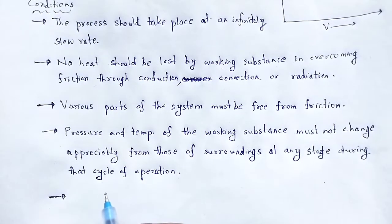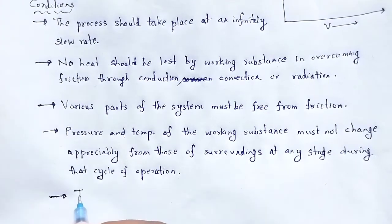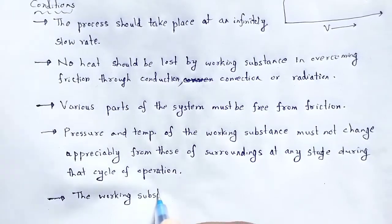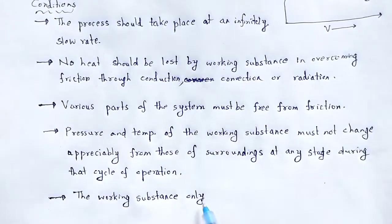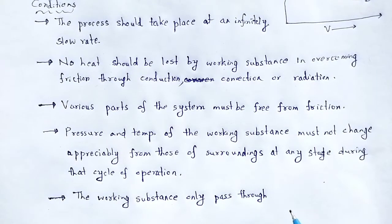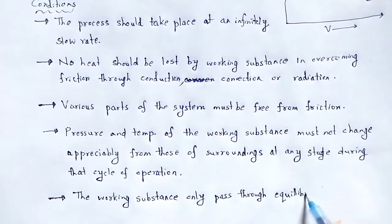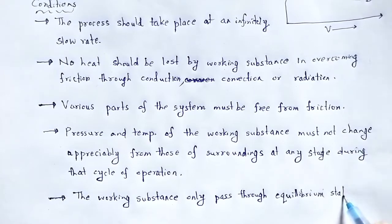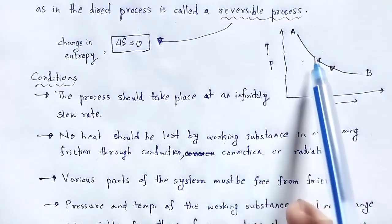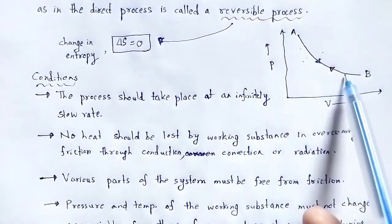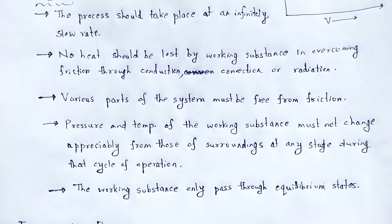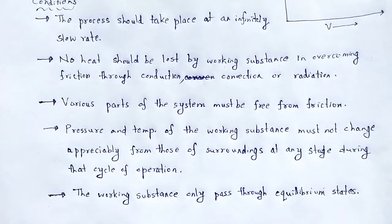Another condition for a reversible process is that the working substance should only pass through equilibrium states. In case of a reversible process, when the working substance passes through each step, the process is considered to be at equilibrium.